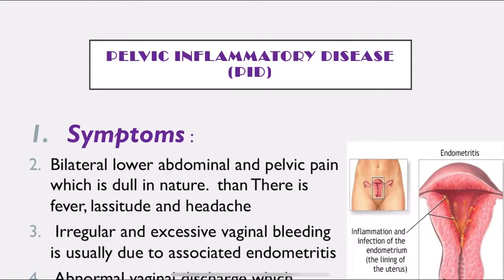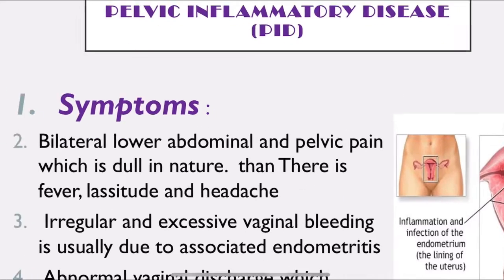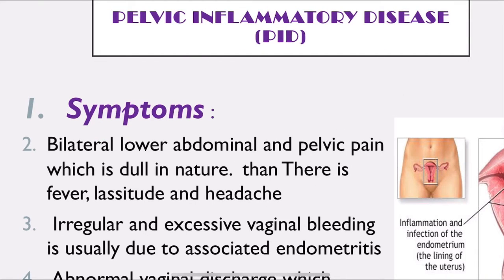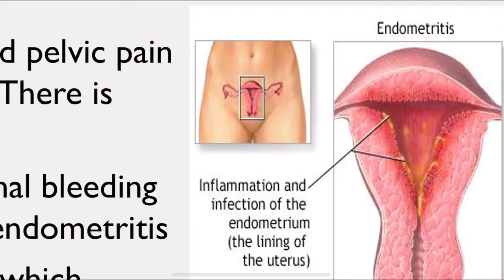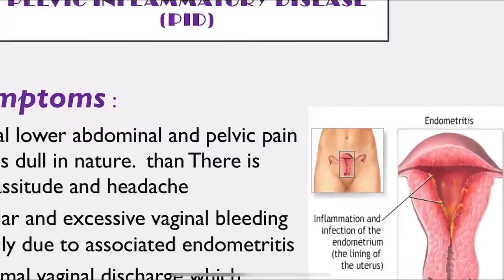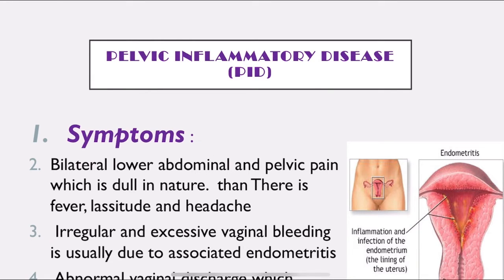The symptoms of pelvic inflammatory disease (PID) include bilateral lower abdominal and pelvic pain which is dull in nature, fever, lassitude, and headache. Irregular and excessive vaginal bleeding is usually associated due to endometritis - inflammation of the endometrium lining the uterus. Abnormal mucopurulent vaginal discharge is also present.